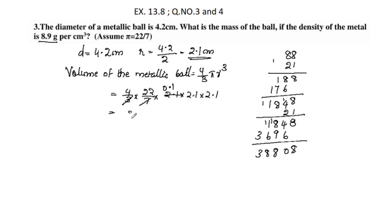The result is 38808, with the decimal point placed 3 positions in, giving us a volume of 38.808 cubic centimeters for the metallic ball.